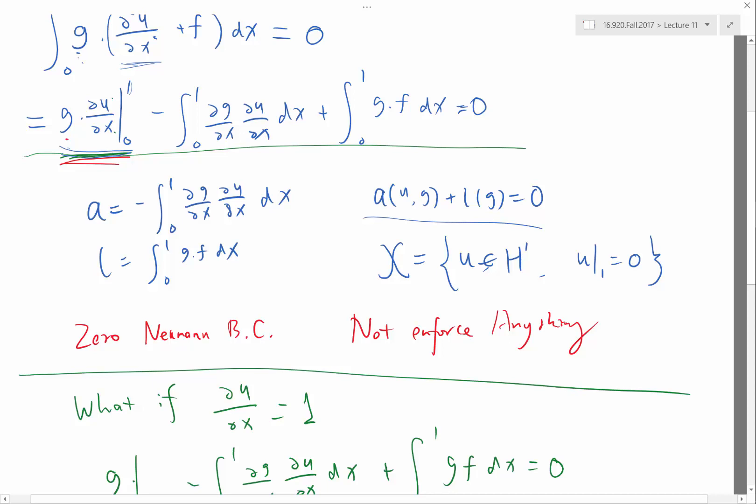If u satisfies any even non-zero Dirichlet boundary condition that means the possible perturbations you can make on the solution still has to satisfy a 0 Dirichlet boundary condition. So, g the test function always lives in a linear space which means if it satisfies a certain boundary condition the boundary condition is going to be a 0 boundary condition.